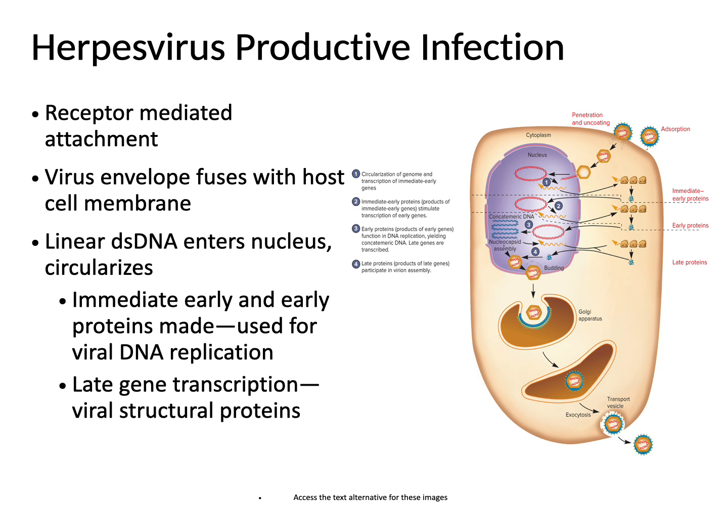The life cycle of herpes virus involves receptor-mediated attachment allowing for entry and uncoating. Because this is a double-stranded DNA virus, the genome enters the nucleus. It is linear to begin with but becomes circular, and then mRNA is produced. Proteins are expressed, including immediate early and early proteins important for DNA replication of the genome, and then late gene transcription occurs, which is important for viral structural proteins that make up the capsid.